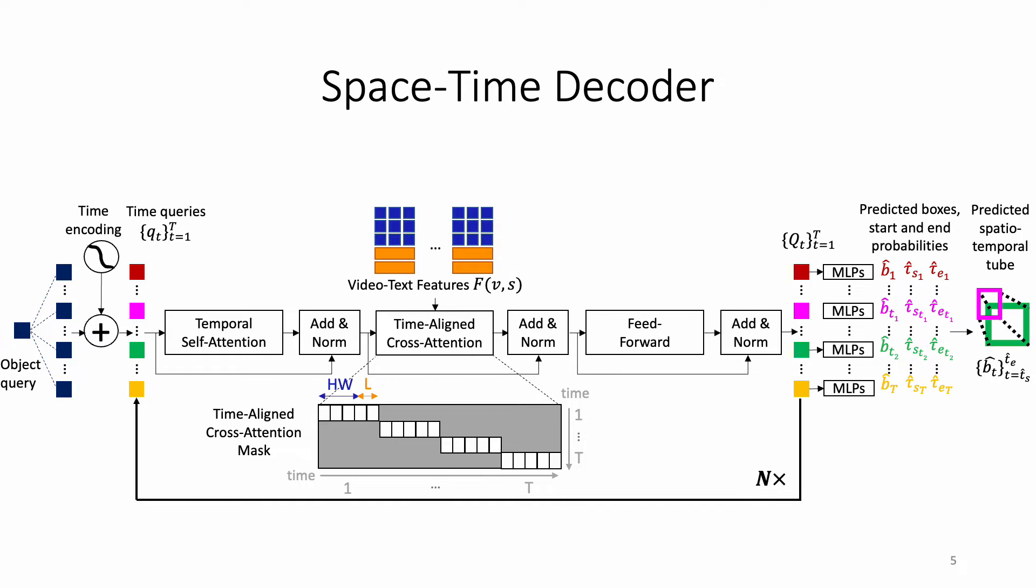In detail, the decoder alternates between temporal self-attention layers to model temporal relationships across the whole video, time-aligned cross-attention layers to incorporate the video-text features, and feedforward layers. Both spatial and temporal localization are then tackled with multi-layer perceptron heads on top of the contextualized time queries.